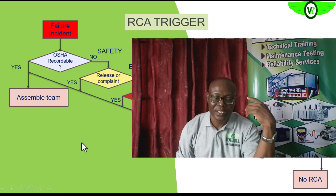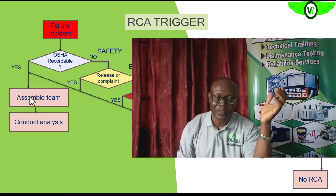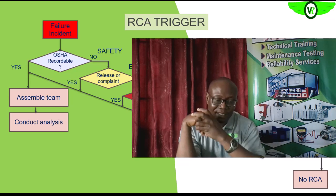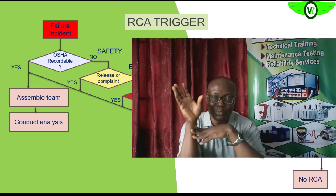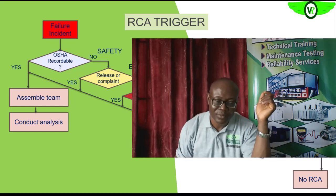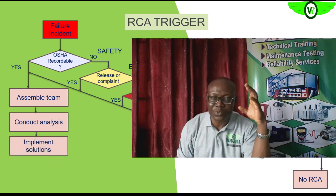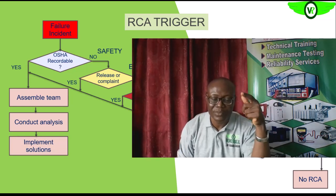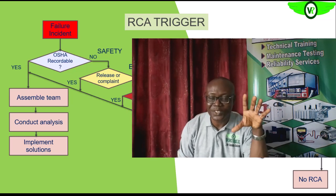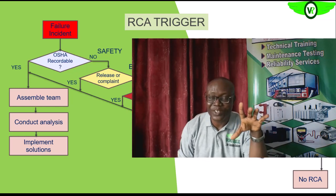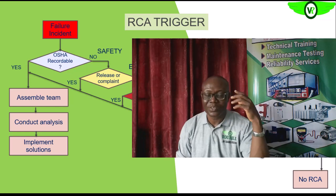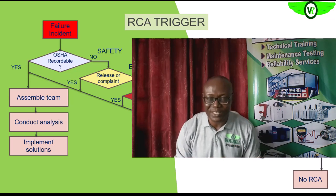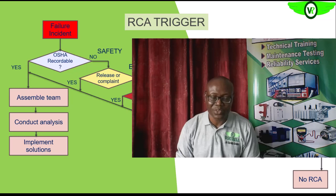Once you have assembled the team, the next step is to conduct the analysis. You can use any RCA process — for example, the 5-Why analysis — until you zero in on the most probable cause of the problem. Once you identify the cause, the RCA team will recommend actions to address it. This is one area that often causes the failure of reliability programs: the solutions recommended by RCA teams are never implemented.